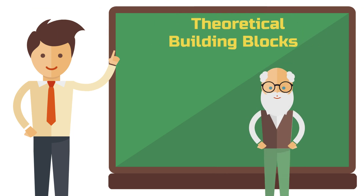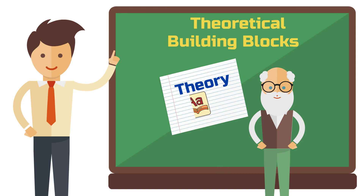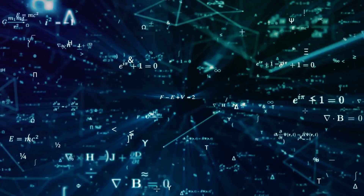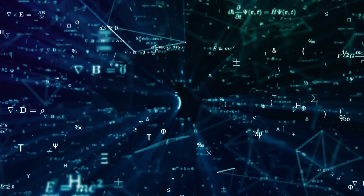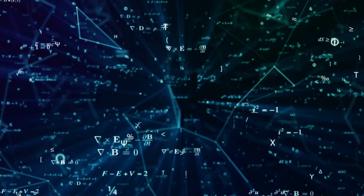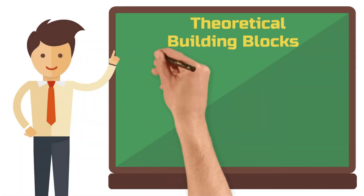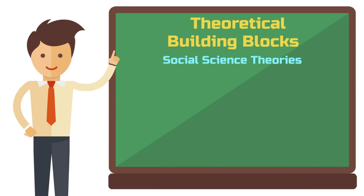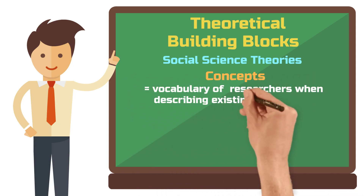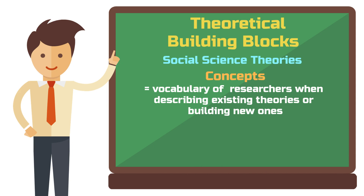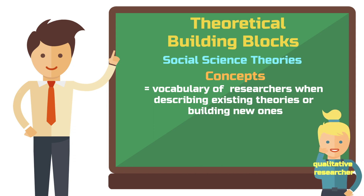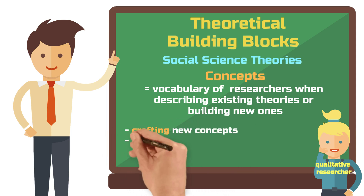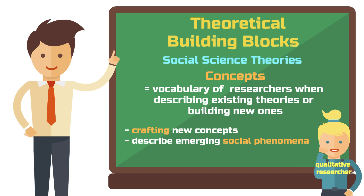The currency of the social sciences is theory. Social science theory relies on linguistic elements, even within the quantitative paradigm. In contrast, mathematicians and physicists build their theories with numbers and equations, reflecting the philosophical assumptions and nature of these disciplines. Social science theories require the use of concepts as foundational elements. These concepts serve as the vocabulary employed by researchers when describing existing theories or while building new ones. Qualitative researchers tend to be more at ease with this aspect of research, as they often enjoy crafting new concepts to enrich the theoretical landscape and to describe emerging social phenomena.